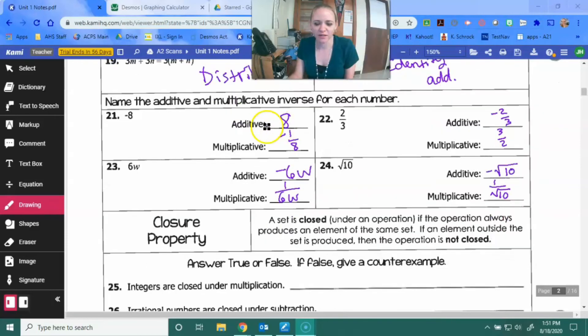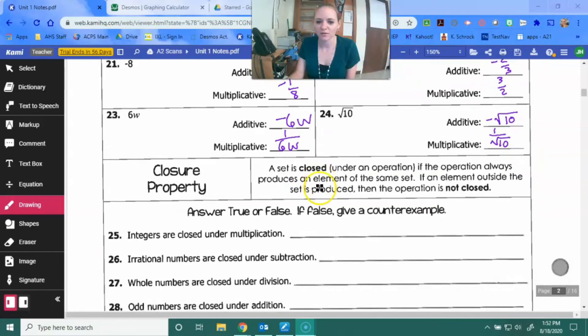By the way, yes. I did get called out when I was in 7th grade and I abbreviated associative with the first three letters. My teacher called me out for the whole class. So, I never, ever, ever abbreviate associative on purpose. And spell, you know, that word. So, yeah. Don't do it. I'll call you out and embarrass you. And then the inverses. So, the opposite of negative 8 is positive 8. Multiplication. I just flip it. Put it in the denominator. Negative 1/8. 2/3 is negative 2/3 and 3/2. 23 is negative 6w and 1 over 6w. And 24, negative radical 10 and 1 over radical 10.